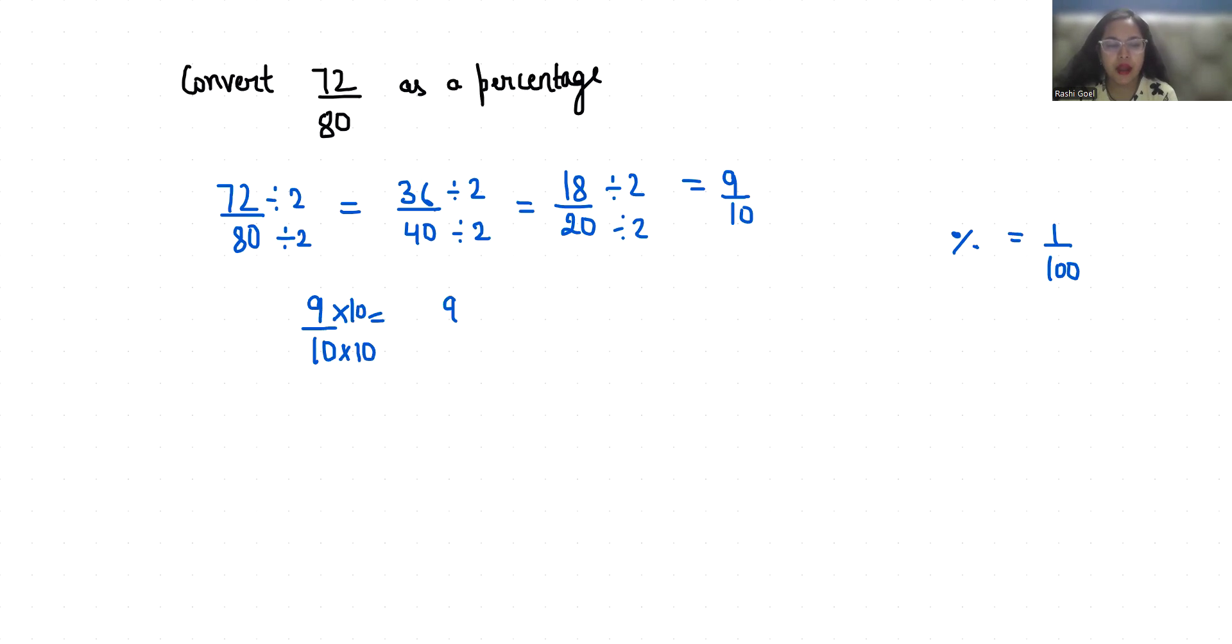So it's 90 by 100 which we can write as 90 times 1 by 100, and 1 by 100 we can replace with percentage. So 72 by 80 is 90 percent.